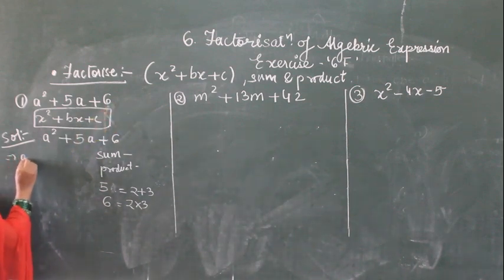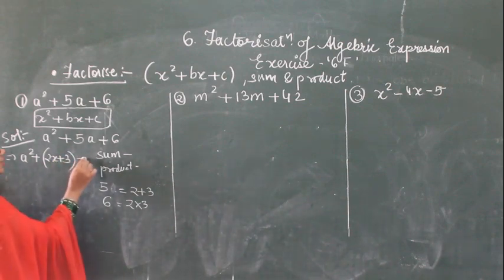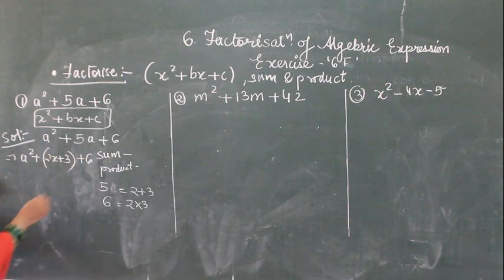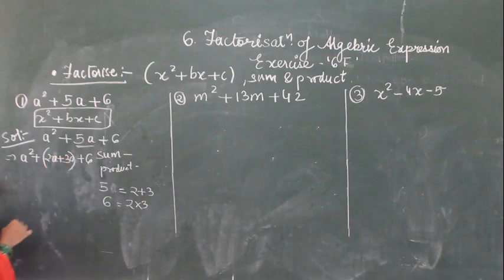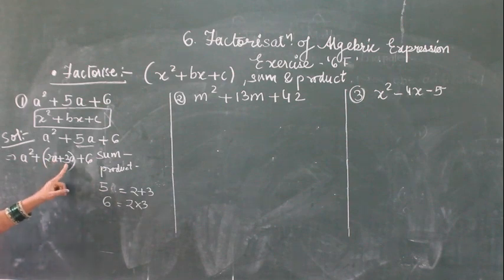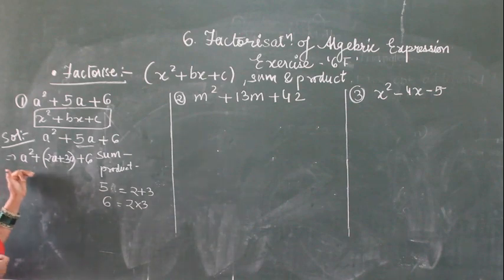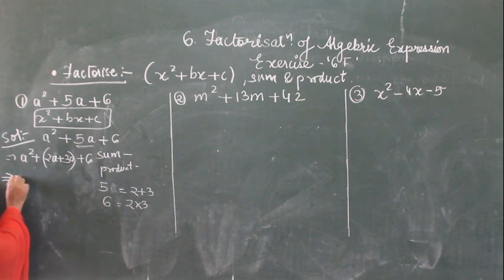So I can write down a square plus — this 5a will be written as 2a plus 3a — plus 6. So 2a plus 3a is equal to 5a and 2 into 3 is equal to 6. So yes this is correct. Now after coming in this form, we have to do the pairing. So how will we pair? If I take out 'a' common from the first pair, I will remain with a plus 2.